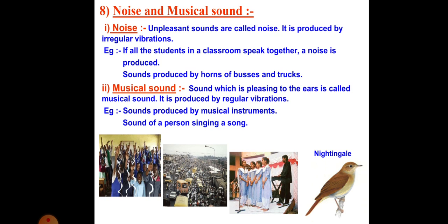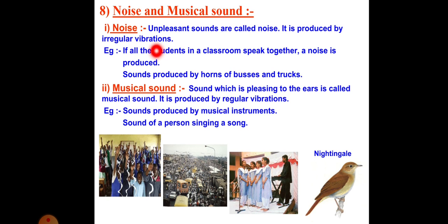Sounds are classified into two: noise and musical sound. Noise is an unpleasant sound. Unpleasant sounds are called noise — sounds not pleasant to hear. Noise is produced by irregular vibrations. There are no regular vibrations; the vibrations are irregular, so it is called noise.